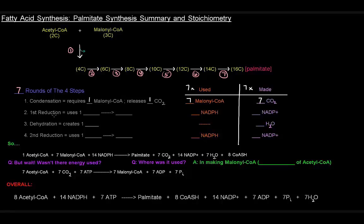The first reduction used one NADPH, which is turned into NADP+, and that happened seven times. So we have seven NADPHs used in the first reduction and seven NADP+ resulting from that.